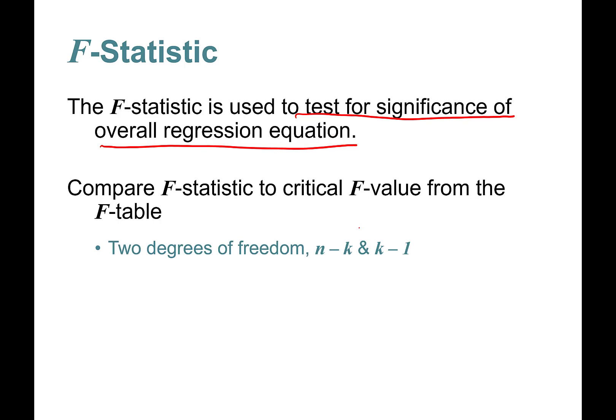You need to look at two degrees of freedom: n minus k, where n is the number of observations minus k, the number of parameters to be estimated, and also k minus 1.